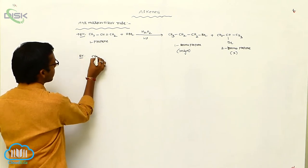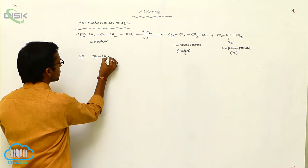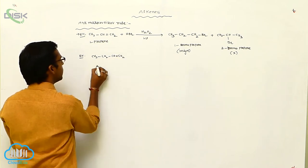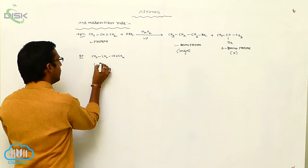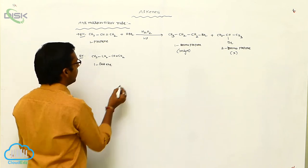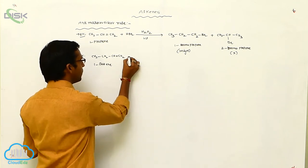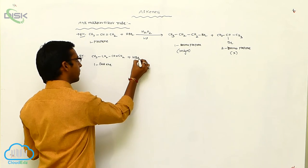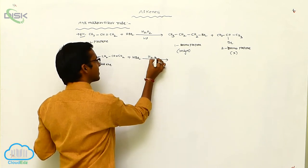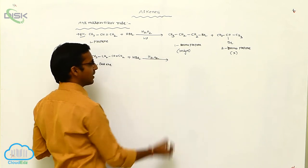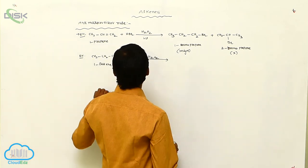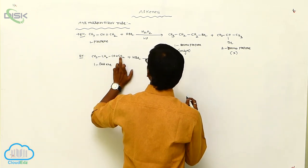For example, CH3CH2CH double bond CH2, which is 1-Butene. This 1-Butene is reacted with HBr in the presence of hydrogen peroxide, meaning the Anti-Markovnikov product is formed — the negative charge attaches to the carbon with more hydrogen atoms.